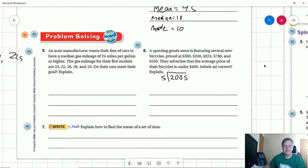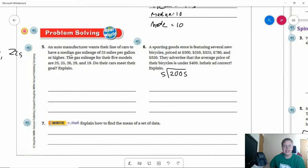Number 5, an auto manufacturer wants their line of cars to have a median gas mileage of 25. So if I'm looking at these data points, I've got 19, then 23, then 25, then 26, and 29. 25 would be my median. So yes, that is going to meet that requirement.